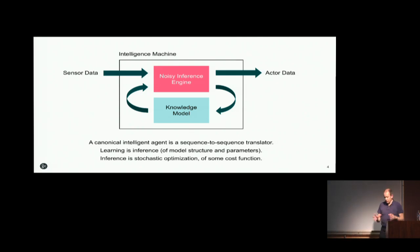But ultimately it will produce actions, that's its only observable external characteristic. And it consists of two parts. It consists of a knowledge model that is a condensate of all of the data that it has ever experienced. A big probability distribution of some sort. And an inference engine that allows it to use that probability distribution to do its sequence to sequence translation. But also to decide how to update the probability distribution. In other words, how to do the condensation of sensed data into useful information.